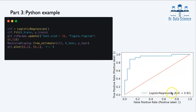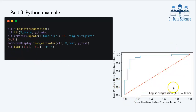Then the magic line is RocCurveDisplay.from_estimator — you pass the trained classifier and your test data, and this gives you the blue ROC curve for logistic regression. We can also look at the area under the curve (AUC), which is 0.92 — always better than 0.5. Finally, we plot the 45-degree line for the random classifier. The area under that diagonal is half the area of the unit square, which is 0.5 × 1 = 0.5. I hope you find this video helpful — please like and subscribe, see you next time.